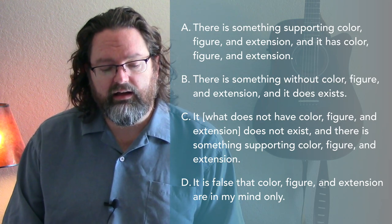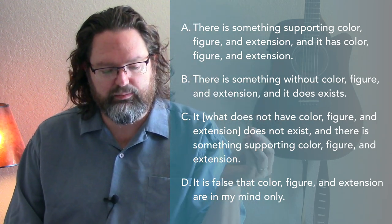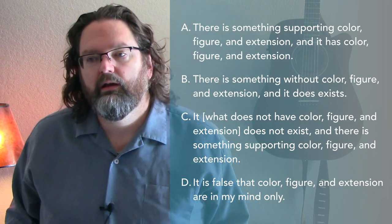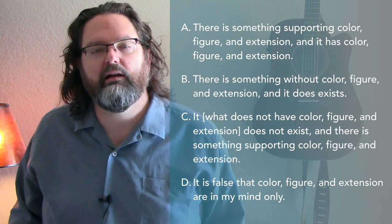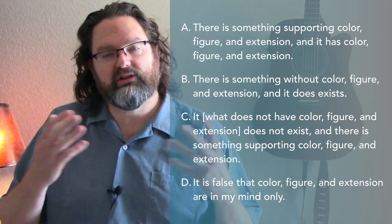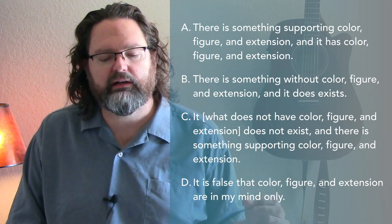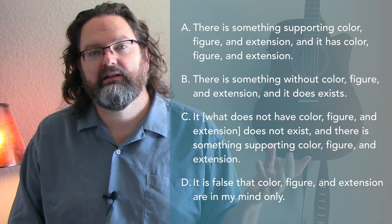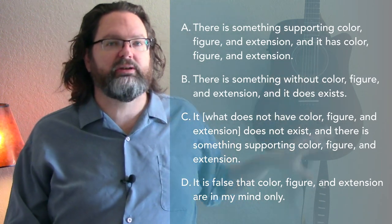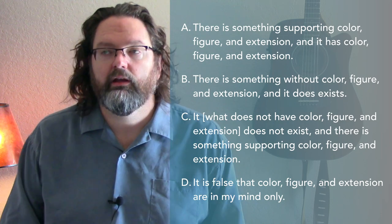So then that leaves us with B. If there's something without color, figure, and extension, then it does not exist. This is embracing empiricism. So if we reject B, we're saying there is something without color, figure, and extension and it exists. We don't have a logical contradiction in here, and we don't even have something absurd like with A or D. A is committed to this regress of material substance. D is saying my ideas are infusing the guitar. C results in a logical contradiction. But what are we saying with B? We're saying there is something without color, figure, and extension. There's something that I can't see and it exists. That's rationalism. You can stick with this — there's an atomic structure here, there's material substance here, I can't see it, but it's there. You're now a rationalist, which is Berkeley's point.